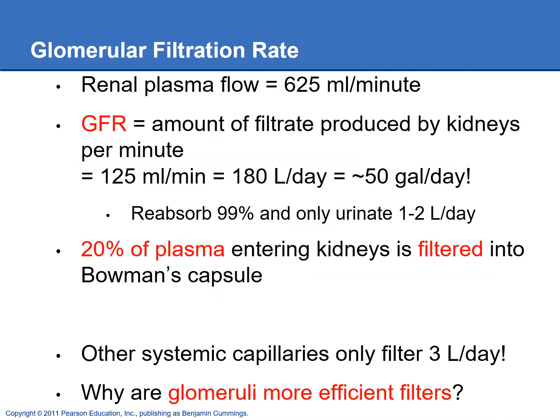The glomerular filtration rate — abbreviated GFR — is really important to know. The GFR is the amount of filtrate produced by both kidneys per minute. Normally, the GFR is 125 mL of filtrate per minute, which converts to 180 liters per day — about 50 gallons of filtrate produced by the kidneys every day.